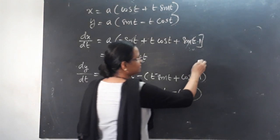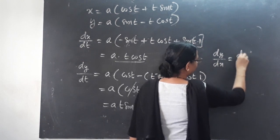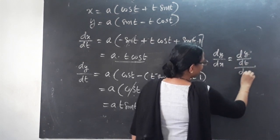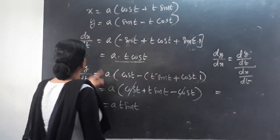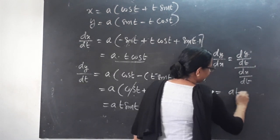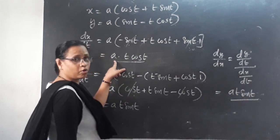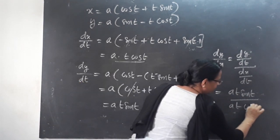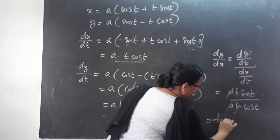dy by dx equals dy by dt divided by dx by dt. That is a·t·sin t divided by a·t·cos t, which gives dy by dx equals tan t.